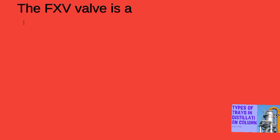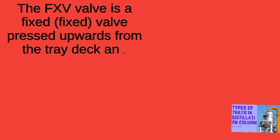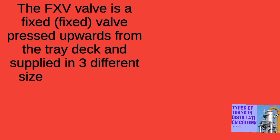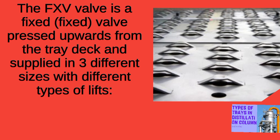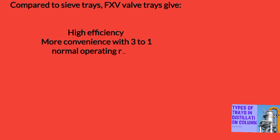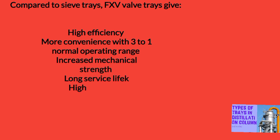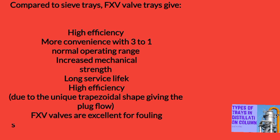The FXV valve is a fixed valve pressed upwards from the tray deck and supplied in 3 different sizes with different types of lifts. Compared to sieve trays, the FXV valve trays give higher capacity, greater flexibility with a normal operating range of 3 to 1, increased mechanical strength, longer service life, and higher efficiency due to a distinct trapezoidal shape giving plug flow. FXV valves are excellent for fouling services, e.g. for columns within a HF alkylation unit.